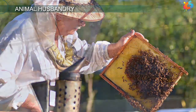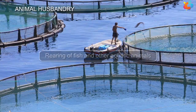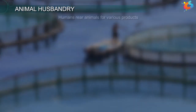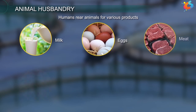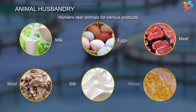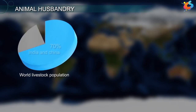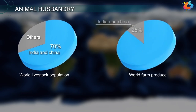Fisheries include rearing of fish and other aquatic animals. Humans rear animals for various products like milk, eggs, meat, wool, silk, honey, etc. More than 70% of the world's livestock population is in India and China. However, their contribution to world farm produce is a mere 25%.